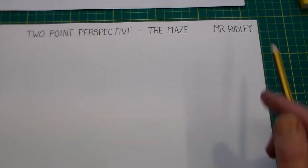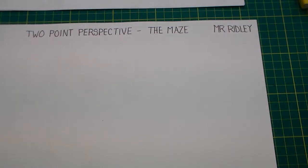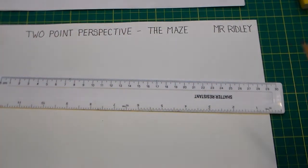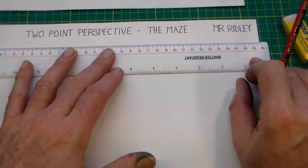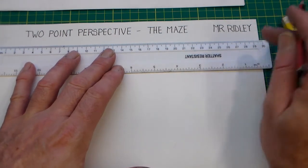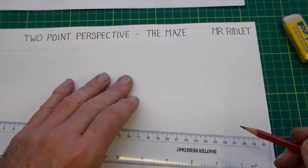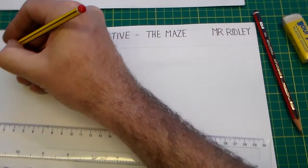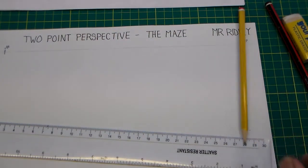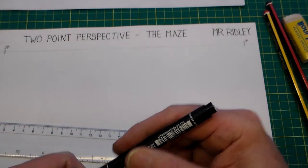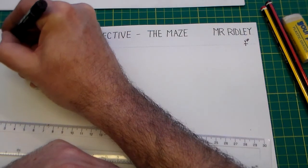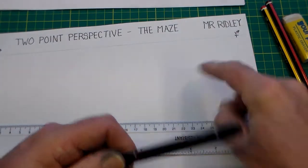First of all, the title here is 'Two-Point Perspective: The Maze.' I'm going to use a pencil — I have a 2H pencil and an HB pencil. I also have a ruler and an eraser. The first thing I'm going to do is, a couple of centimeters down from the title, put in a horizon line. Then we're going to add a vanishing point here and a vanishing point there — so we've got our vanishing points and our horizon line.